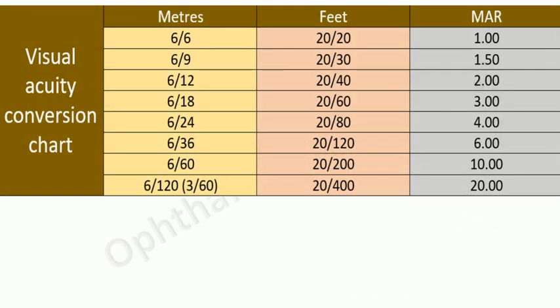This is a conversion chart for visual acuity checked in meters and in feet. The minimal angle of resolution for a normal person as we have already discussed is 1 minute.